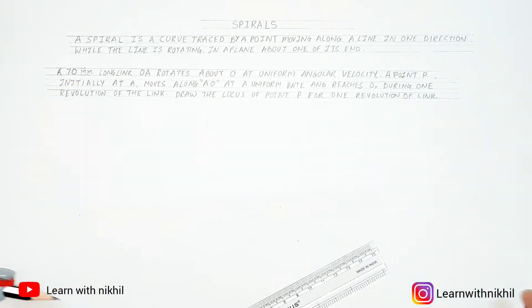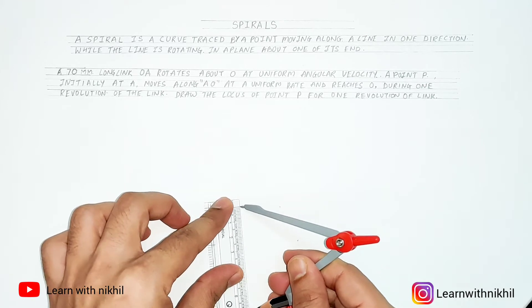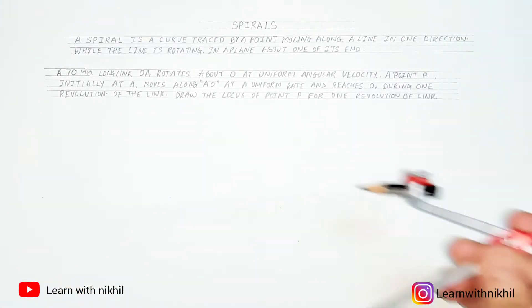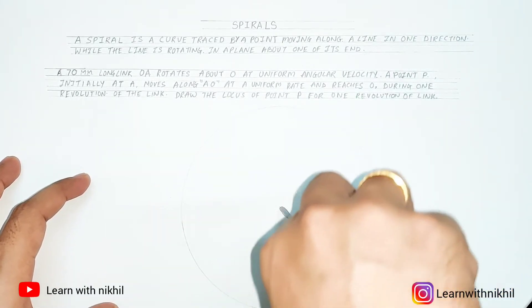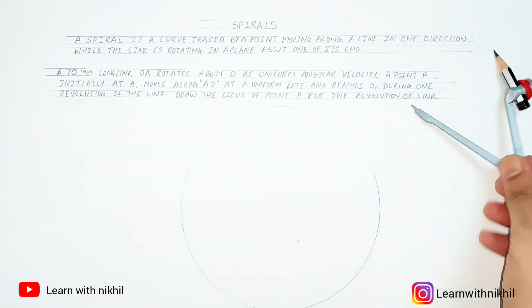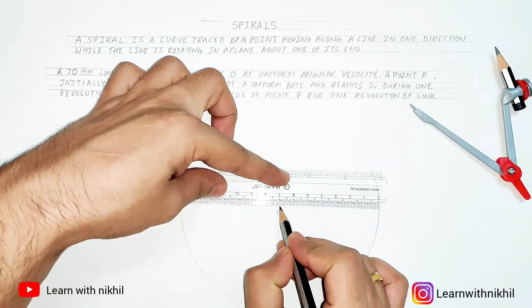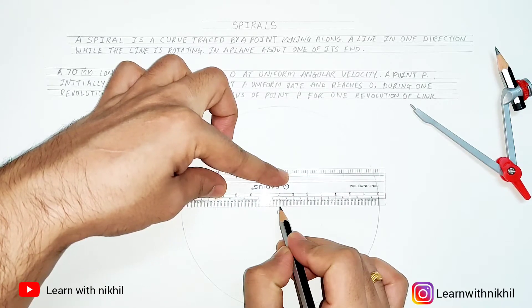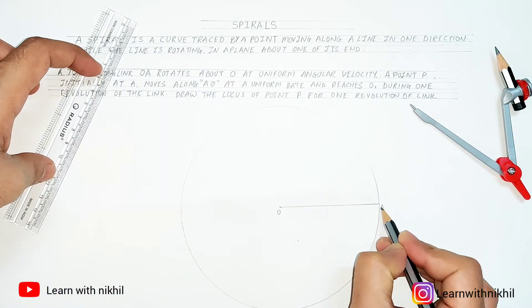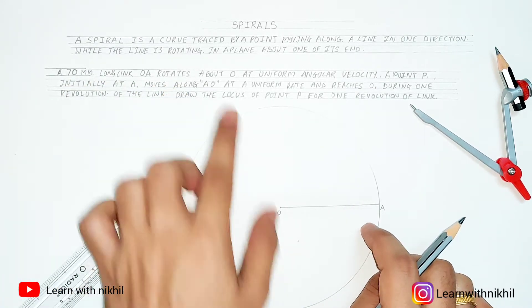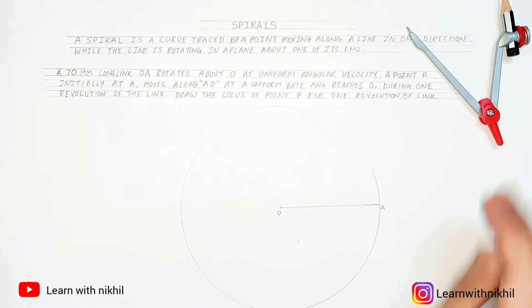First step, we will draw a circle with radius as 70 millimeter. As it says a 70 millimeter long line OA rotates about O, so here the center is O and a 70 millimeter long length. There is a line OA which rotates at O, so O is the center point and this is a rod which rotates around O. The curve or the line traced by A is a circle.